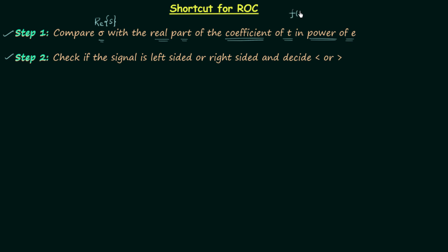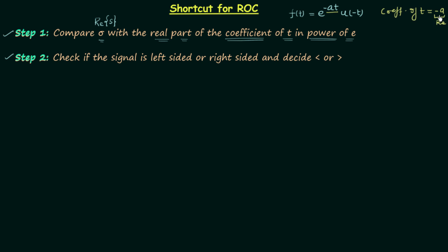For example, let's say there is a time domain signal f(t) equal to e^(-at)·u(-t). According to step one, we need to compare sigma with the real part of the coefficient of t in the power of the exponential. The power of the exponential is minus at, so the coefficient of t is minus a. Since minus a is purely real, we compare sigma with minus a.